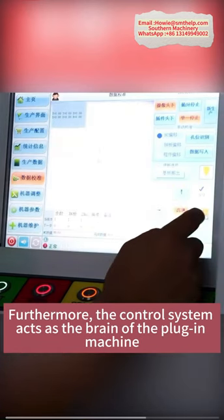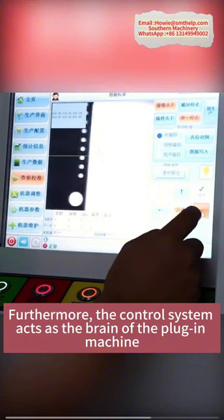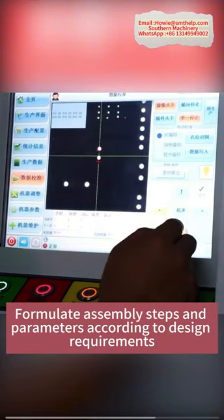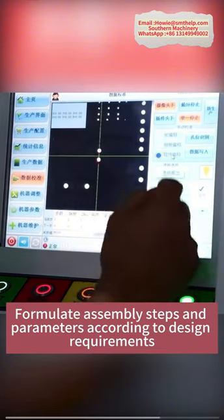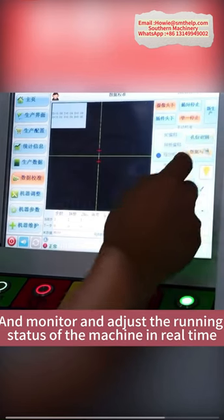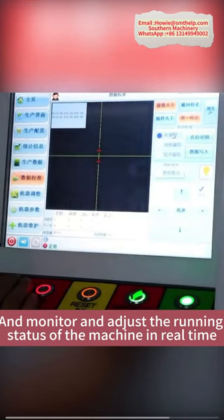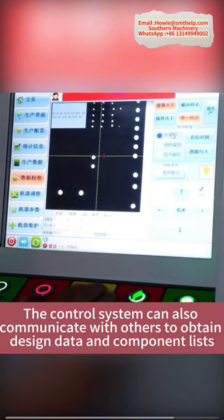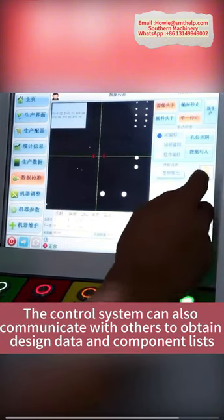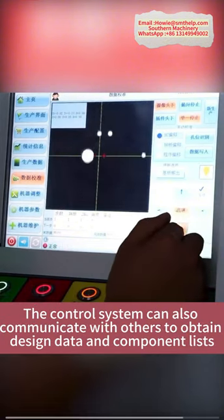Furthermore, the control system acts as the brain of the plug-in machine. It formulates assembly steps and parameters according to design requirements, and monitors and adjusts the running status of the machine in real-time. The control system can also communicate with others to obtain design data and component lists.